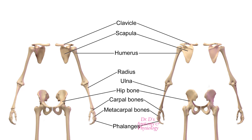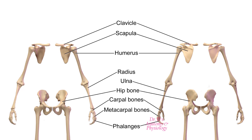When we look at the upper limbs, the base — the attachment to the axial skeleton — consists of two bones: the clavicle, or collarbone, and the scapula.